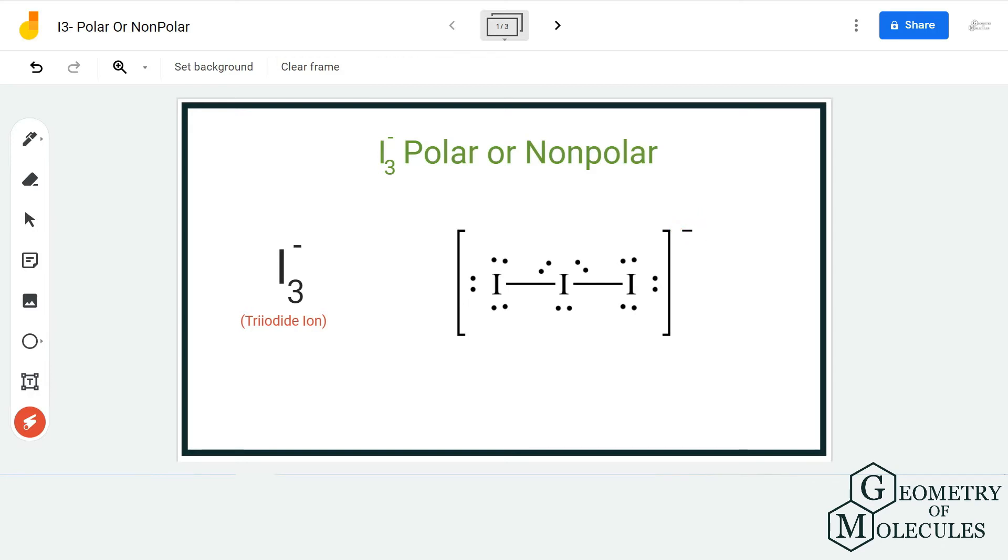If you look at its shape in 3D, it is a linear molecule because all these atoms are iodine and will have the same electronegativity value, which means they'll have the same pull on each other.